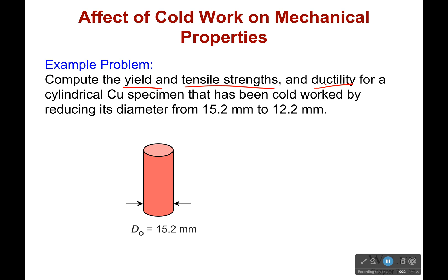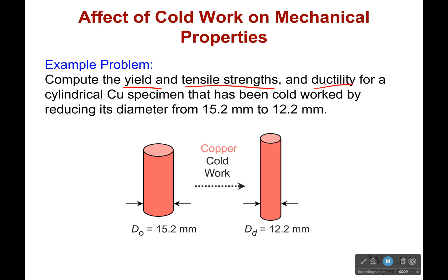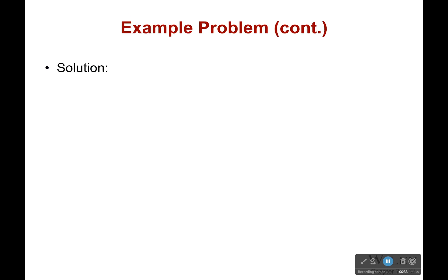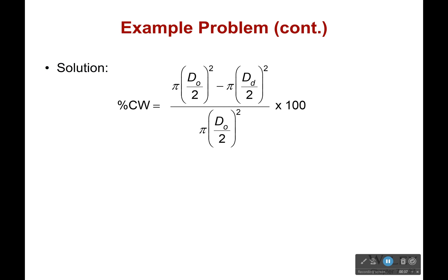If you're wondering how we could do that, we might draw it and that would cause it to become smaller. Lots of different things we could do. So 15.2 millimeters to start and then down to 12.2 millimeters. The first thing we need to figure out is how much cold working we've done — the percent cold work.